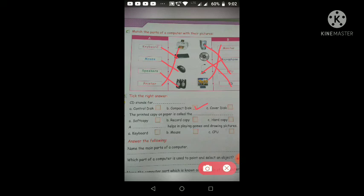Next, number B, the printed copy on paper is called the. Dekhye, jo hum print out lete hain, jo bhi hum write karte hain apne screen par, uska jo hum print lete hain, usse hum kya kehte hain? Paper pe jo print lete hain. Number A is soft copy. Number B, record copy. Number C is hard copy. We call it hard copy.